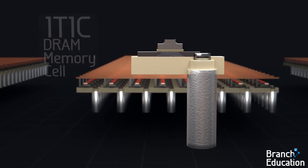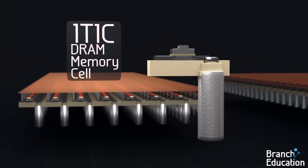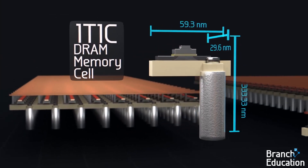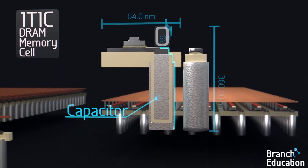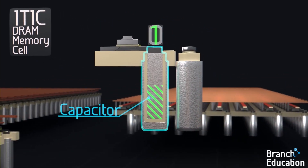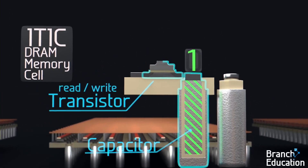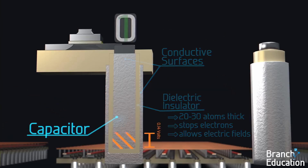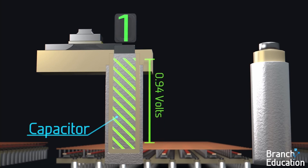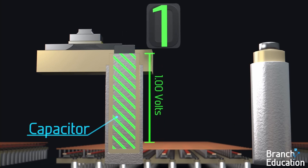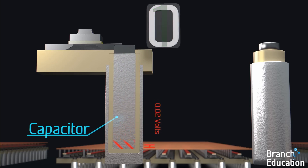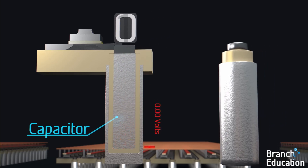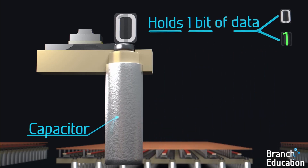This memory cell is called a 1T1C cell and is a few dozen nanometers in size. It has two parts: a capacitor to store one bit of data in the form of electrical charges, or electrons, and a transistor to access and read or write data. If this capacitor is charged up with electrons to one volt, it's a binary one. And if no charges are present and it's at zero volts, it's a binary zero. Thus, this cell only holds one bit of data.